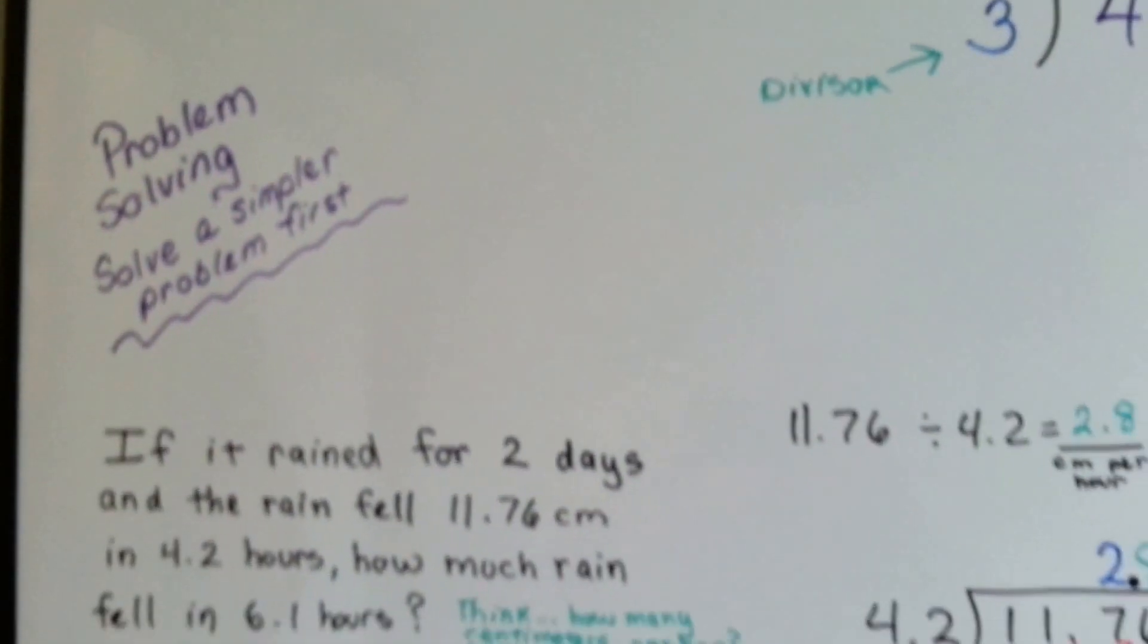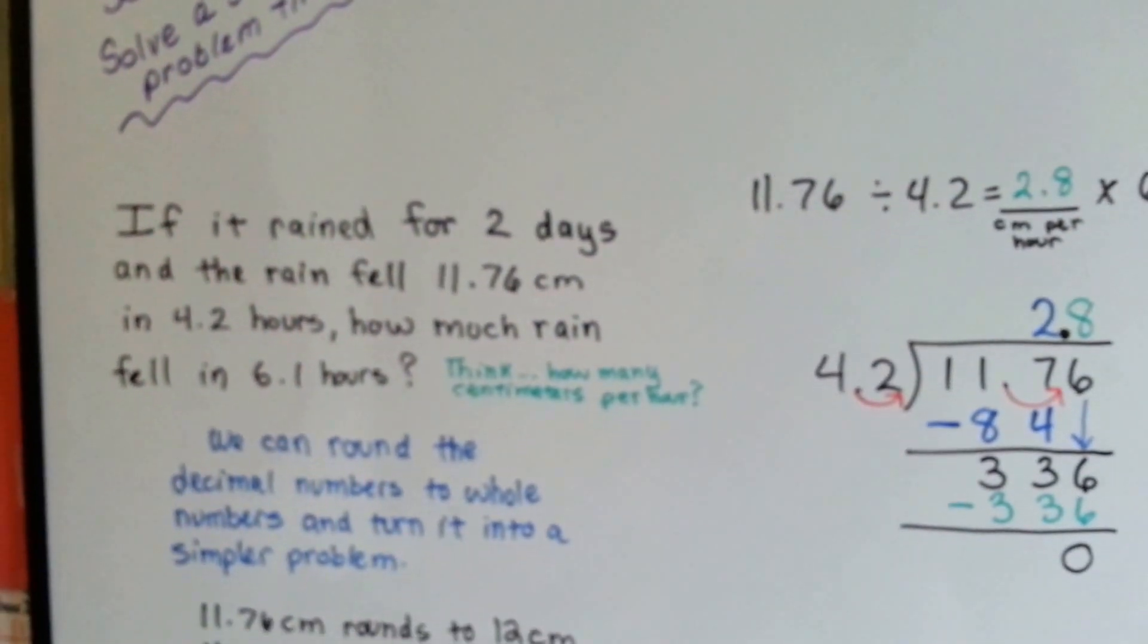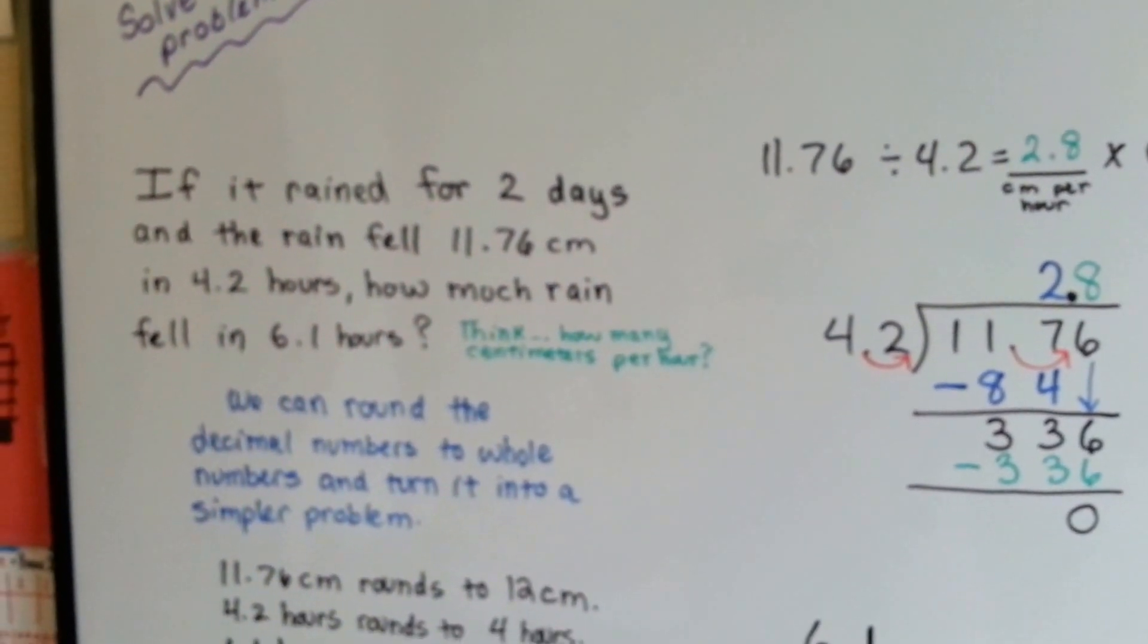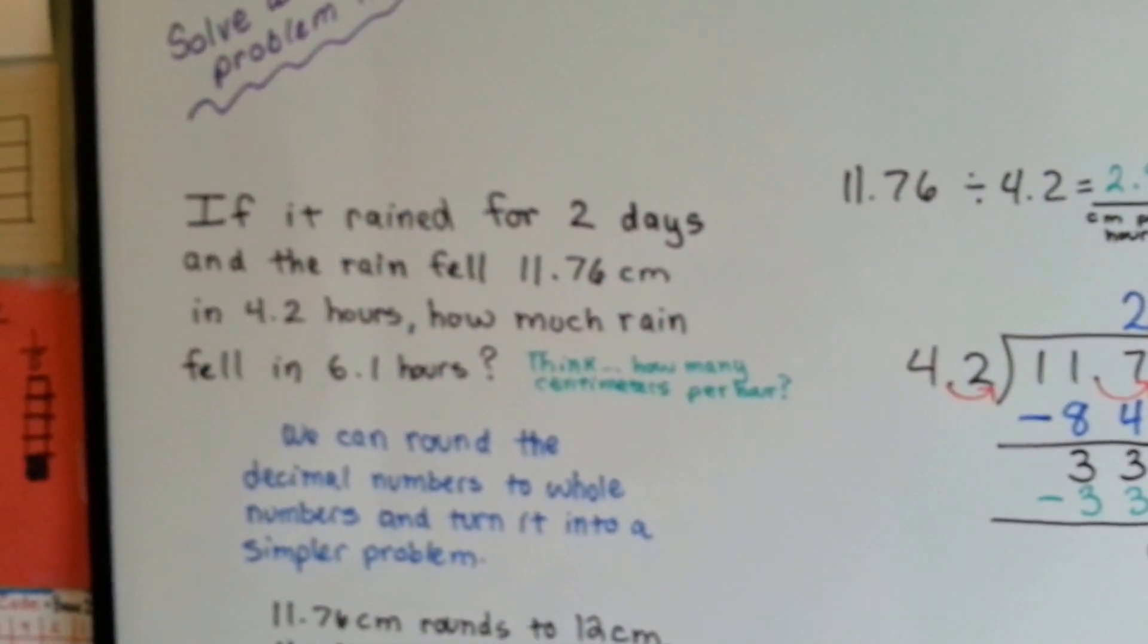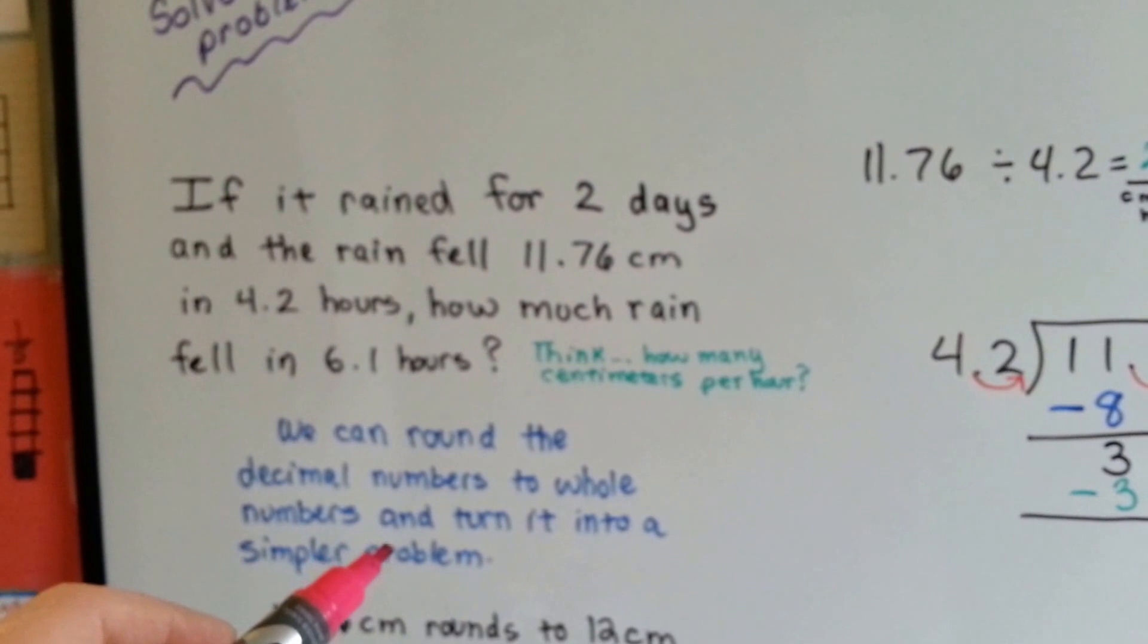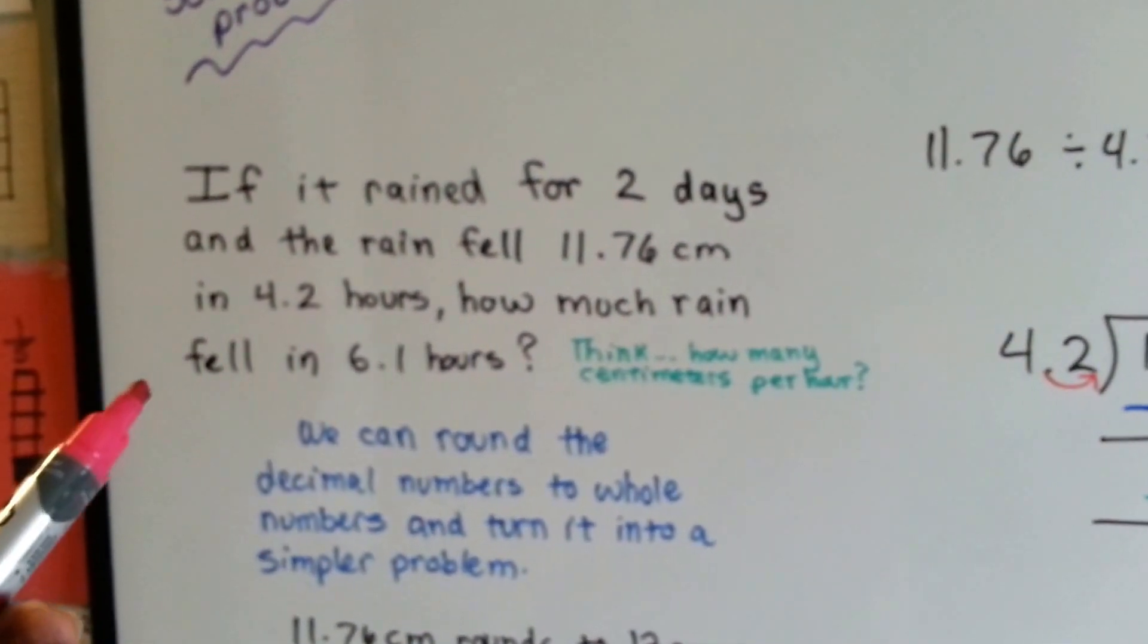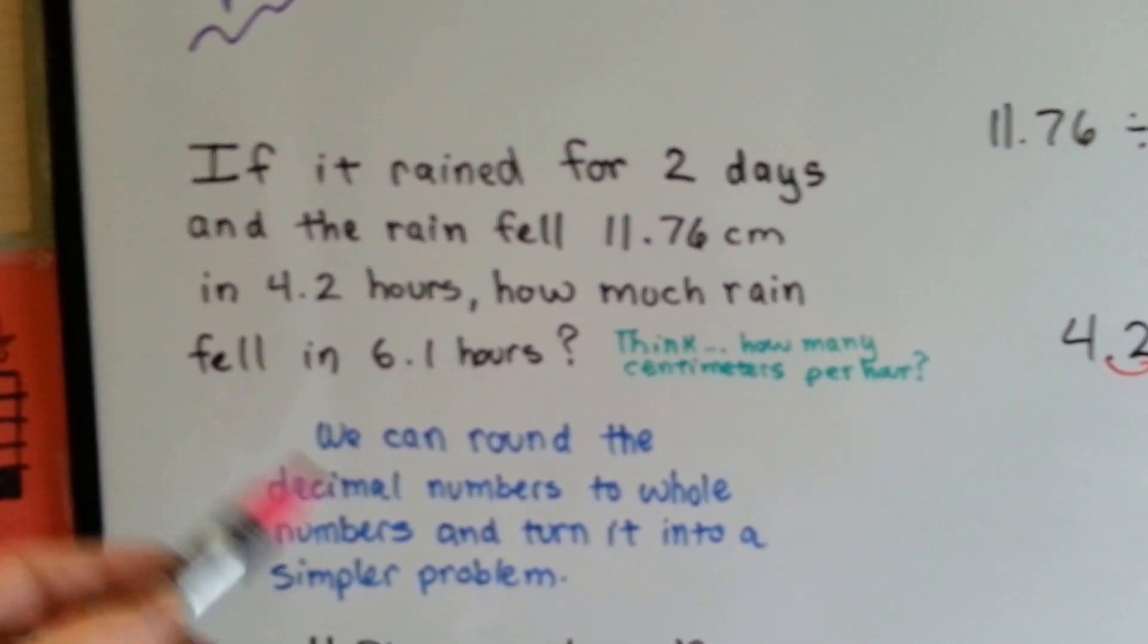Sometimes when we're doing word problems, it looks so confusing that we don't even know where to begin. We don't know what it's asking for. It's just so confusing. When you have difficult numbers or too many numbers, what we can do is break it into a simpler problem.